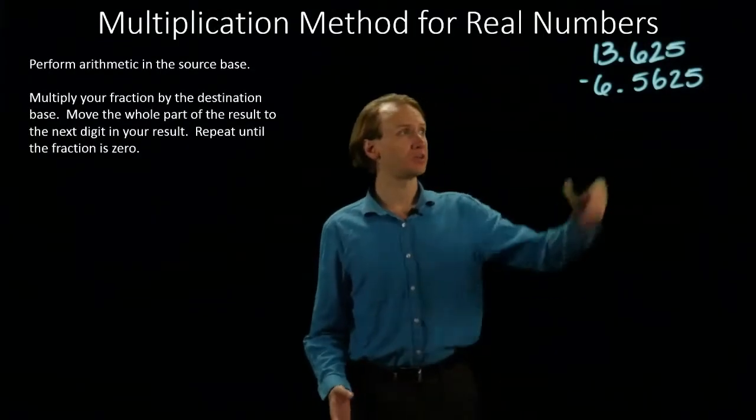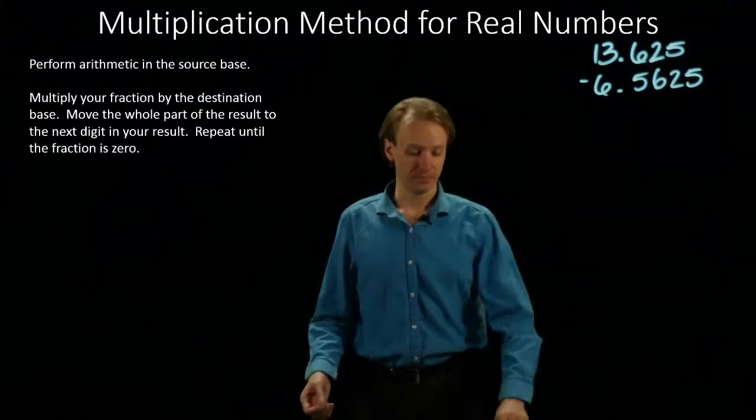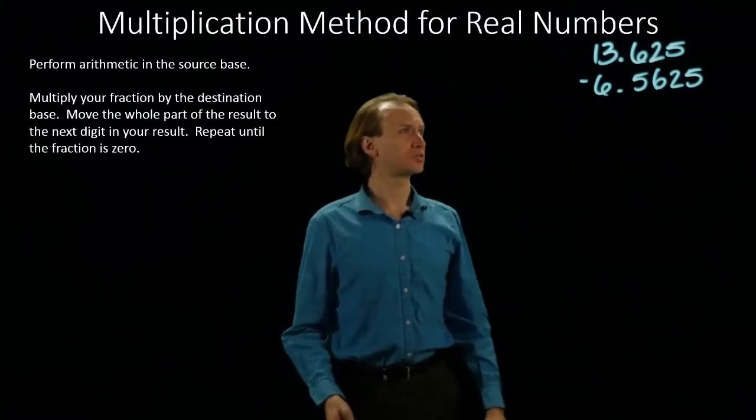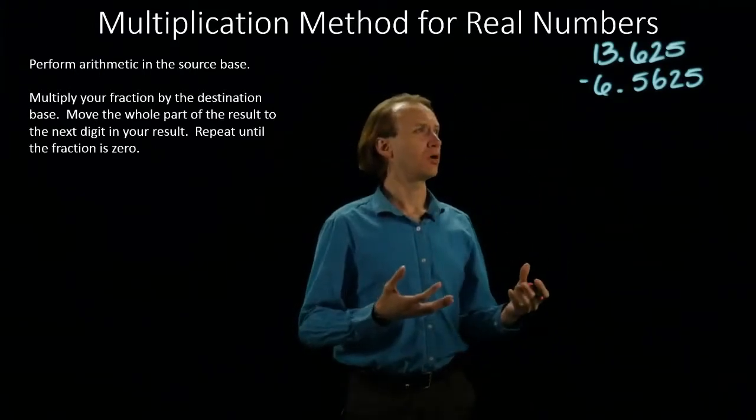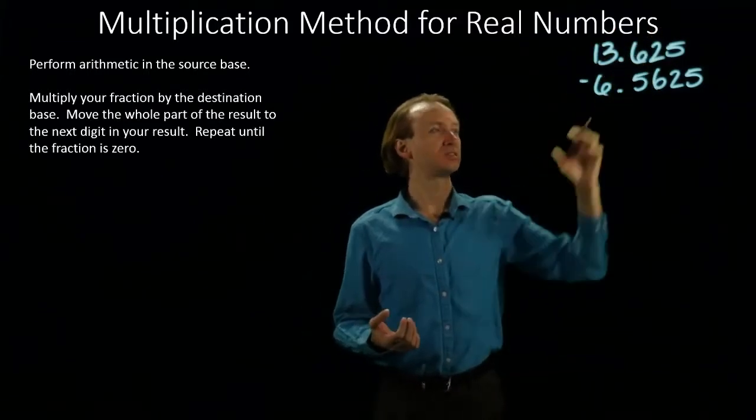For this example, I'm going to be converting these two decimal numbers into binary. I'll start with the 13.625. As I mentioned, I'm going to break this into two parts. I'll convert the 13 separately from the 0.625.